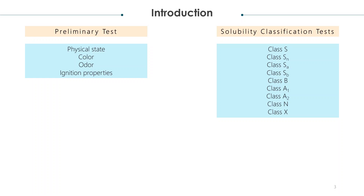Preliminary tests often provide significant information on the characteristics of an unknown sample. Among the properties examined are its physical state — noting whether the compound is a solid or liquid — color, odor, and its ignition properties, which will test the presence for metals. From solubility classification tests, the functional group present in the compound is discovered. The schematic diagram for solubility testing is provided in the manual.